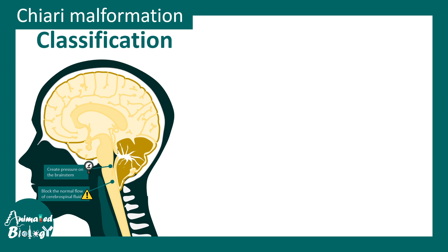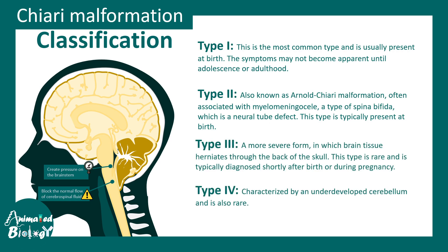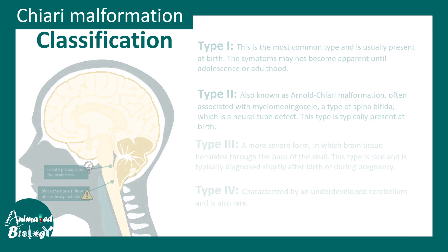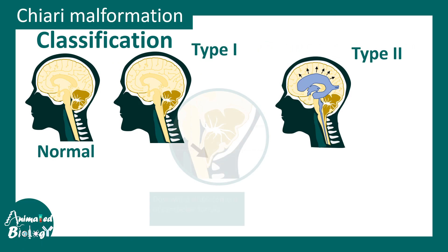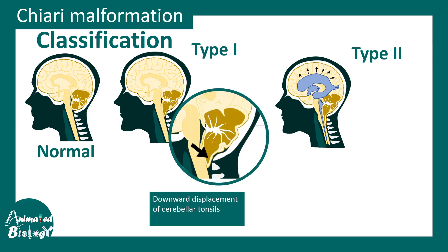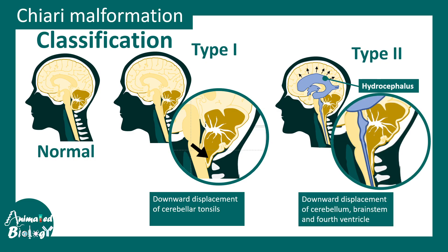There are different types of Chiari malformation: type 1, type 2, 3, and 4. Among them, type 1 and type 2 are most common. In type 1, the cerebellar tonsil is displaced downwards. In type 2, which is more severe, along with the cerebellar tonsil there is displacement of the brainstem, fourth ventricle, and the cerebellum.